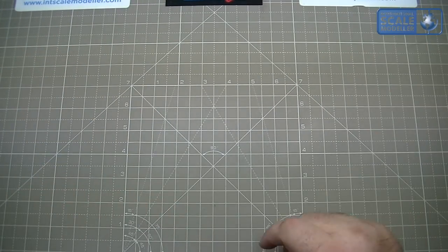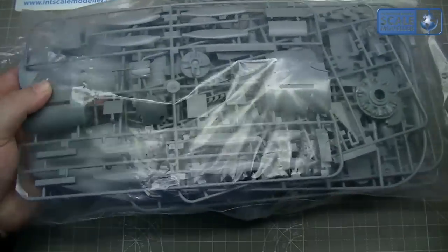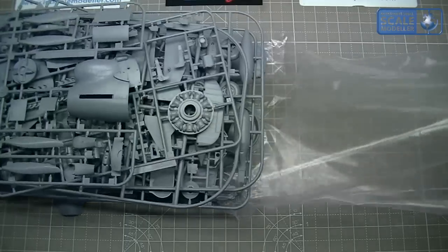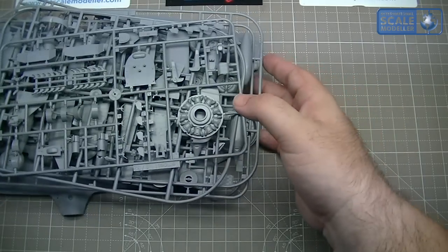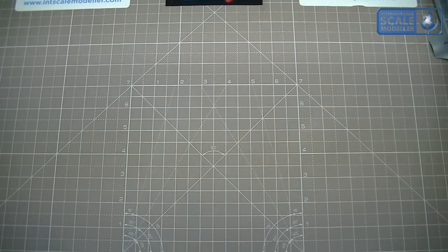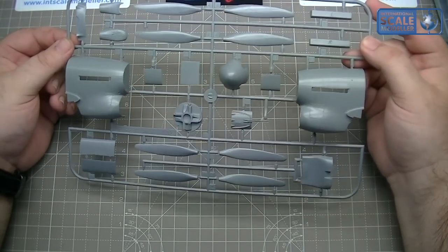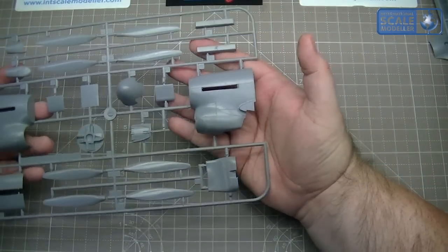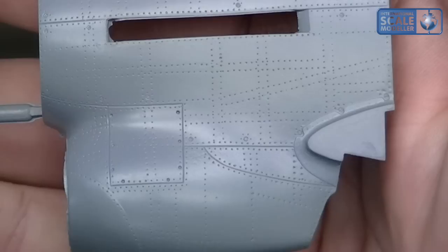All the parts are in one bag, which is a bit of a pet hate of mine, but it's not the end of the world. First sprue - we have the nose, prop spinner, propellers, a few components. And the first thing to see is that beautiful riveting detail that is over the entire aircraft, wherever there's riveting. Absolutely fantastic. That's going to look really good when it holds a wash.